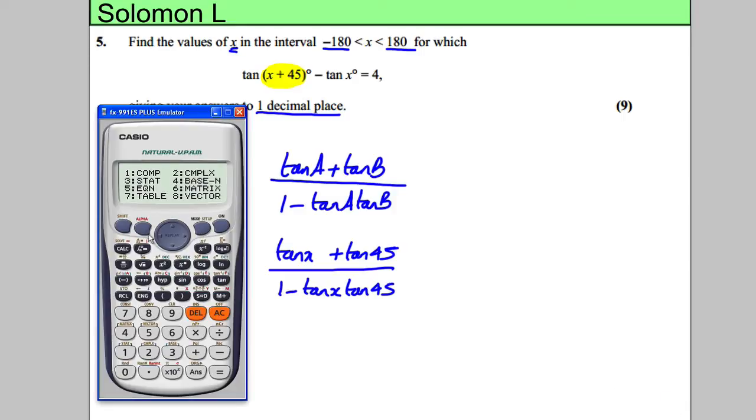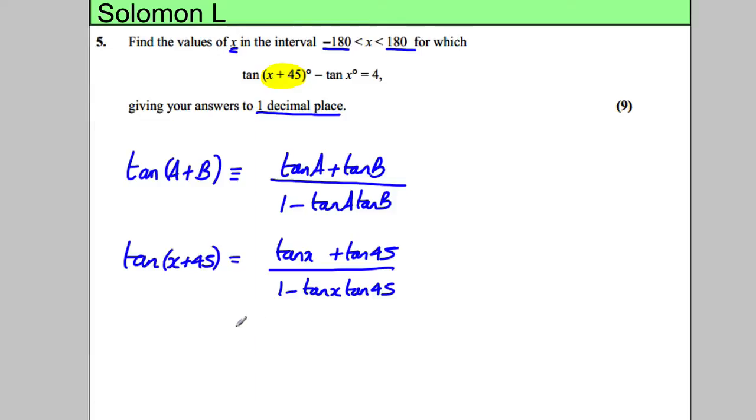Now tan 45, it's one of the ones we should know, it's equal to 1. You can check it on your calculator in degrees mode. So therefore this thing here is 1 plus tan X divided by 1 subtract tan X.